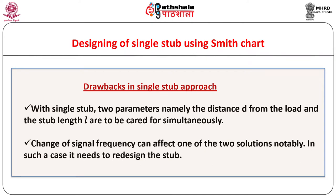Though simple and useful, single stub approach suffers from some drawbacks. With single stub, two parameters — the distance D from the load and stub length L — are to be managed simultaneously. In addition, a change of signal frequency can affect one of the two solutions notably. In such a case, the stub needs to be redesigned. Due to this and many other reasons, a system of stubs is used depending upon the need and type of application.